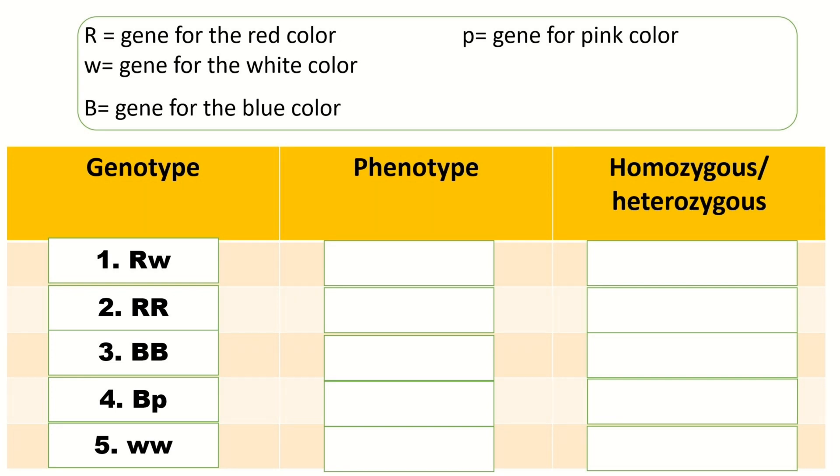Genotype big R and small w, phenotype is red. Big R and big R, phenotype is red. Big B and big B, phenotype is blue. Big B and small p, phenotype is blue.